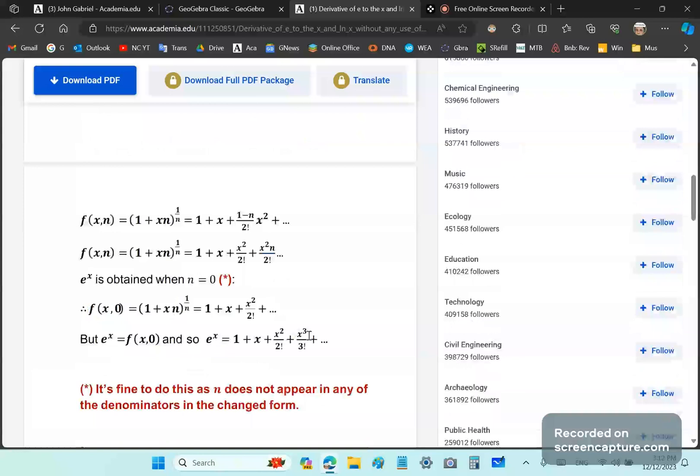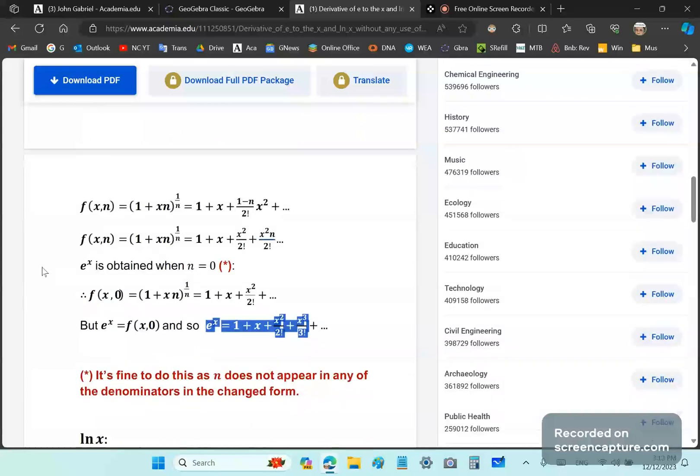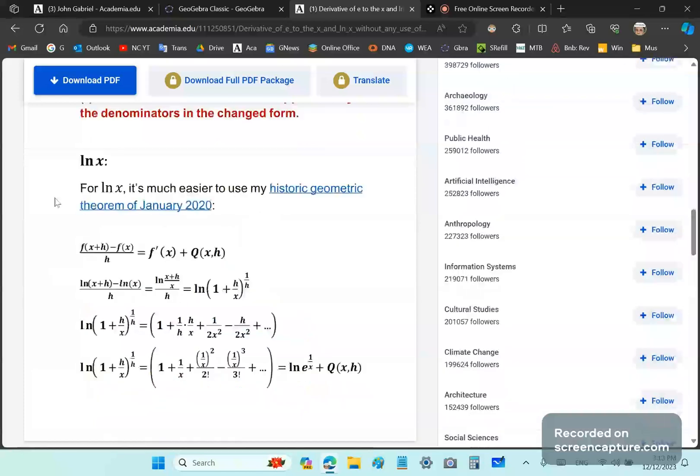If you set n equal to zero, you have the ubiquitous e^x definition. Now logarithm of x, it's not much different. It's also a function of h and x. Here I didn't use n, I used h, and I used the historic geometric theorem because I wanted to give you another perspective of this and how it can be solved.